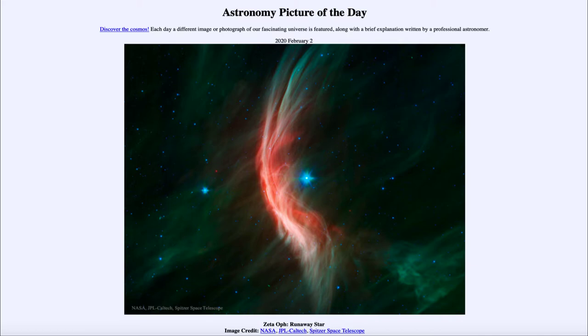is titled Zeta Ophiuchi, Runaway Star. So what do we see here? Well, this blue star at the center is actually what is called a runaway star, traveling at an extremely high velocity of over 20 kilometers every second.